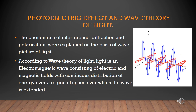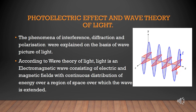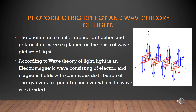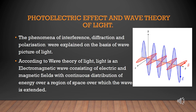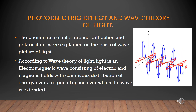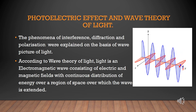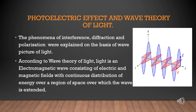Photoelectric effect and wave theory of light. Photoelectric effect is an example for light behaving as a particle. The phenomena of interference, diffraction, and polarization explain that light can behave as a wave. According to wave theory of light, light is an electromagnetic wave consisting of electric and magnetic fields perpendicular to each other, with continuous distribution of energy over the region of space over which the wave is extended.